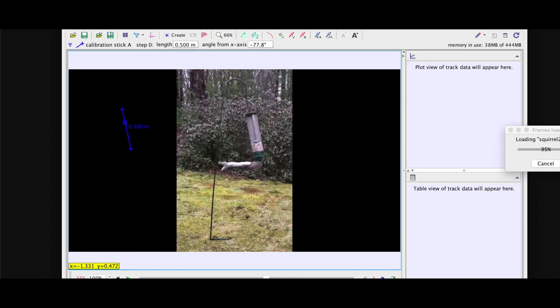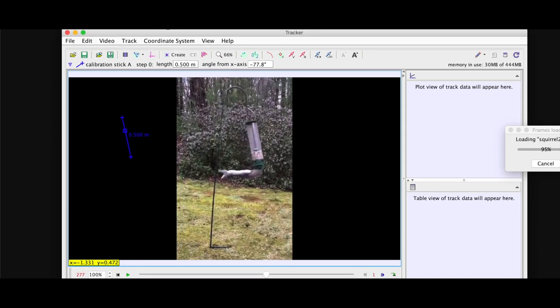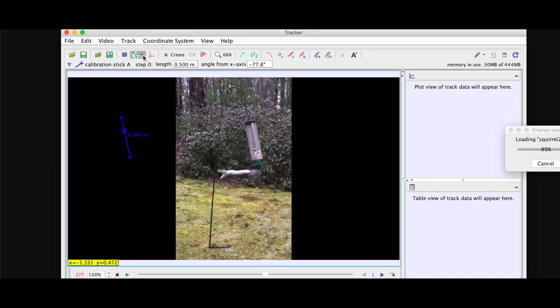I converted it to meters, the scale of the bird feeder, so I scaled that. And so you just do that by going up to here. Let's see, put this down. So you go up to here, and then you go to new calibration stick. And then you just mark the two points, and you enter the distance that it was in about 0.5 meters.